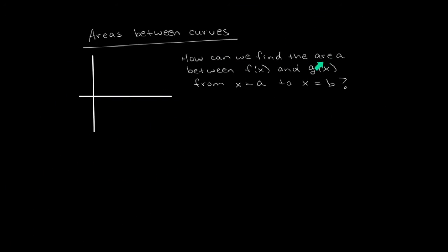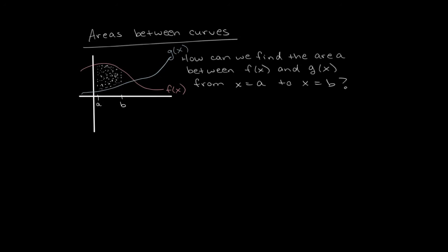Suppose we wanted to find the area between f of x and g of x from x equals a to x equals b. Let's just suppose this is the function f of x and this is the function g of x. The area in question is the dotted region. Using the logic of Riemann sums and basic geometry, we start by subdividing the x-axis into a bunch of sub-intervals.